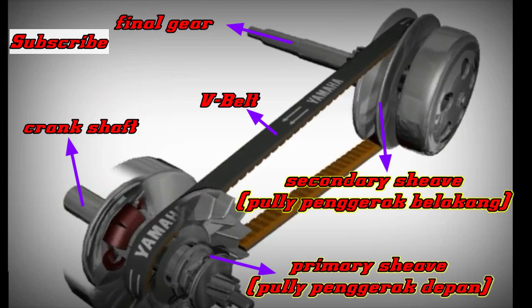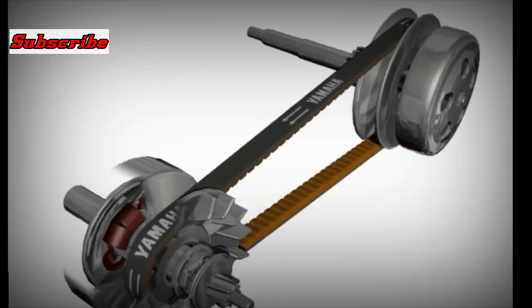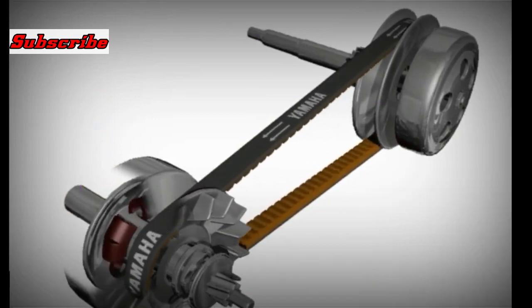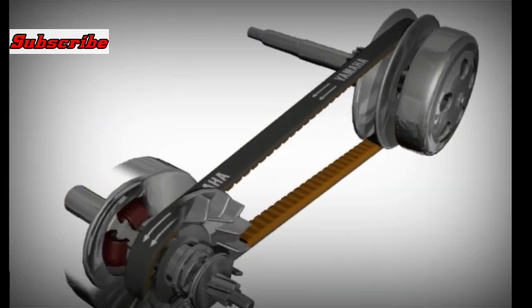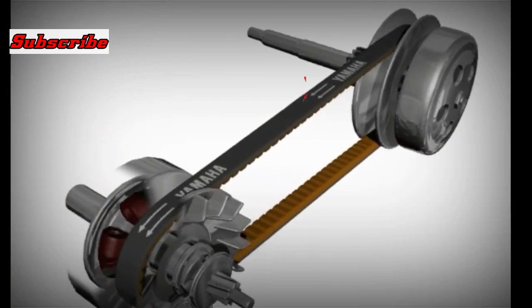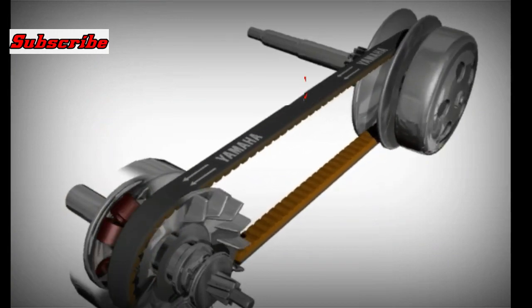The two pulleys can widen and shrink so that they will push the belt outward. The widening and shrinking of the rear pulley depends on the pull of the front pulley.